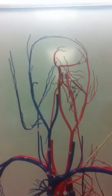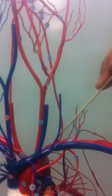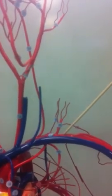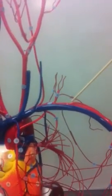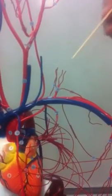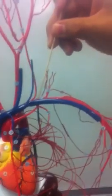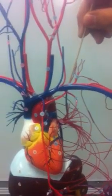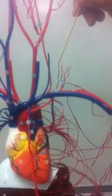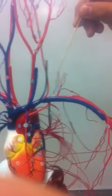Now let's follow the subclavian artery — the left subclavian artery. There are several important branches from it. One of the important branches originates on the dorsal surface of the subclavian artery — that is the vertebral artery.